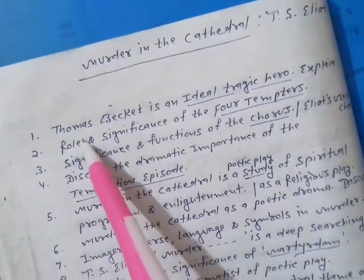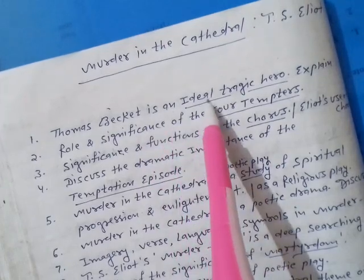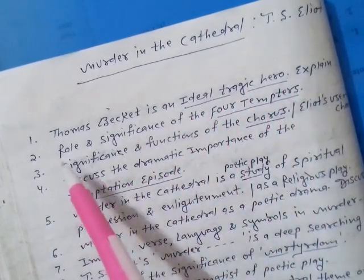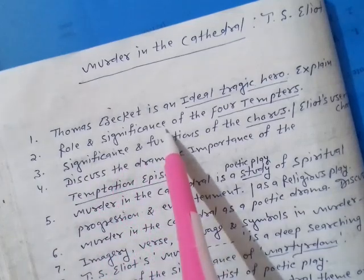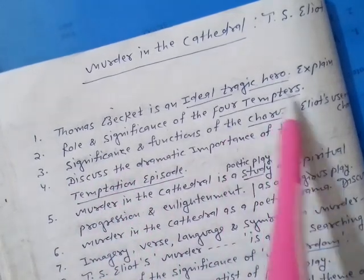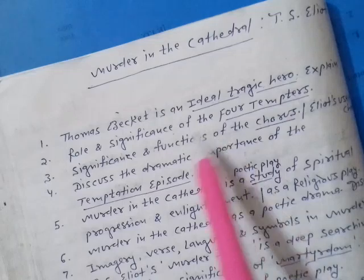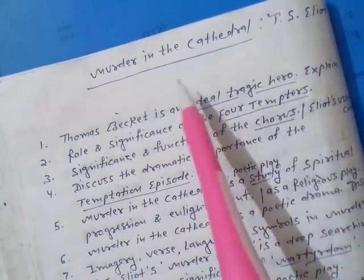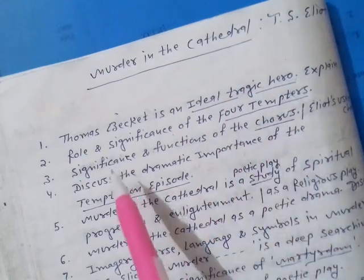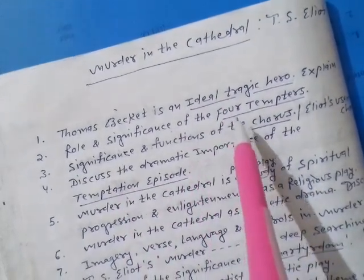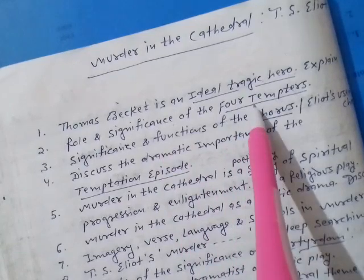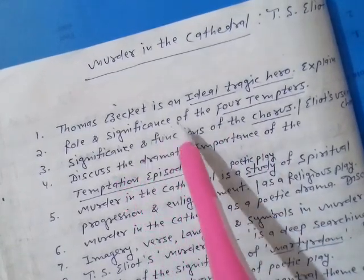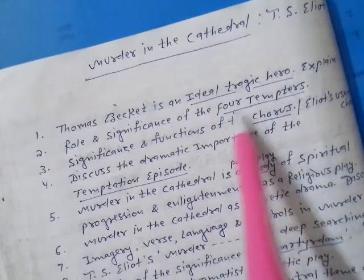The very first is: Thomas Beckett is an ideal tragic hero — explain. The second one is the role and significance of the four tempters. These four tempters are very important in this play, and we are often asked what is the role and importance of those four tempters.